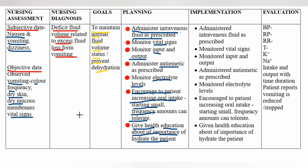Give health education about the importance of hydration. Implementation: administered intravenous fluid as prescribed — for example normal saline — monitored vital signs and input and output, administered antiemetic as prescribed — example IV metoclopramide or oral metoclopramide — monitored electrolyte levels, encouraged patient to increase oral intake, and given health education about the importance of hydration.